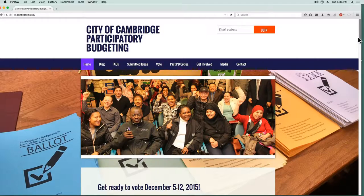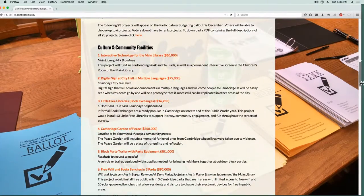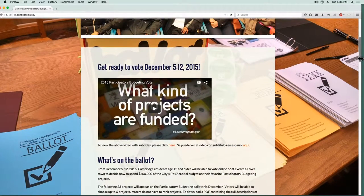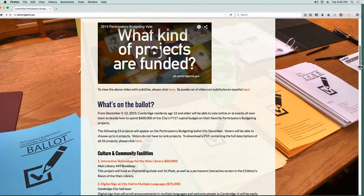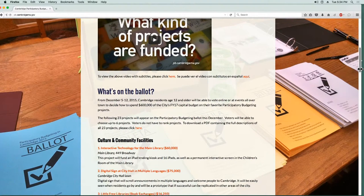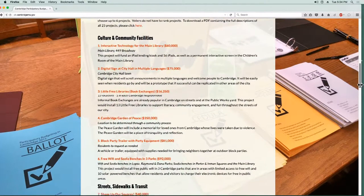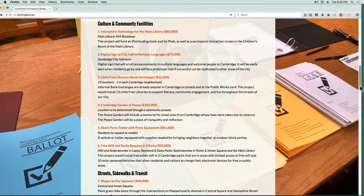Now we have it. All right, so as we glance at this fine piece of work from the webmasters of the city of Cambridge, it says get ready to vote December 5th through 12th. On this Saturday, December 5th from noon to 4 p.m., there's a participatory budget vote kickoff at the Cambridge Side Gallery near the food court.